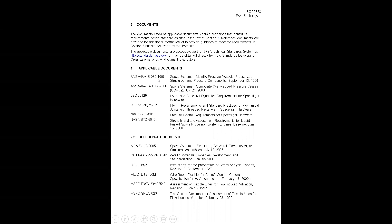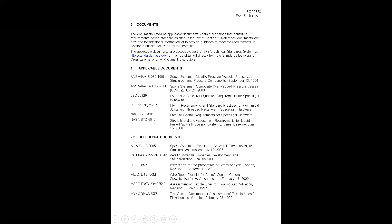You have to look at the standards applicable to your particular program. Reference documents include MMPDS, standards for bellows, and flow-induced vibration. Composite Mill Handbook 17 is referenced and can be very useful in composite material design, including for developing A-BASIS allowables. NASA SP-1007 is a buckling guidance document. NASA STD-5018 provides strength and design verification criteria for glass, ceramics, and windows. NASA 5020 covers fasteners, and NASA 6016 covers process requirements for materials.